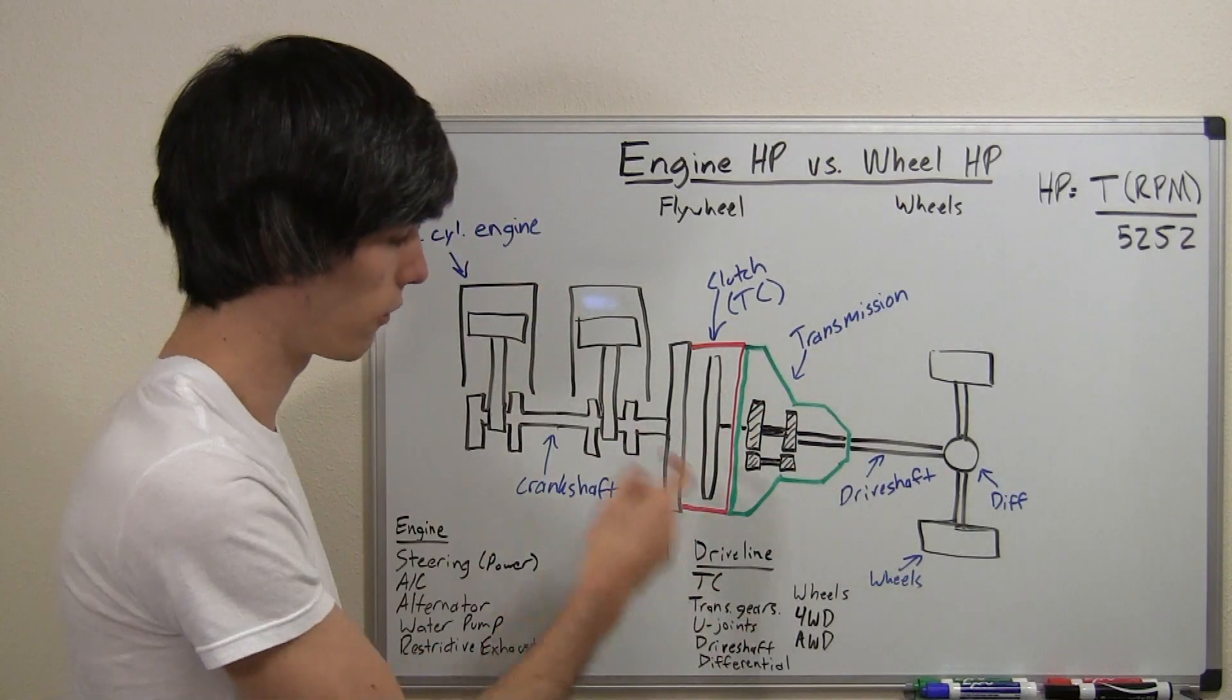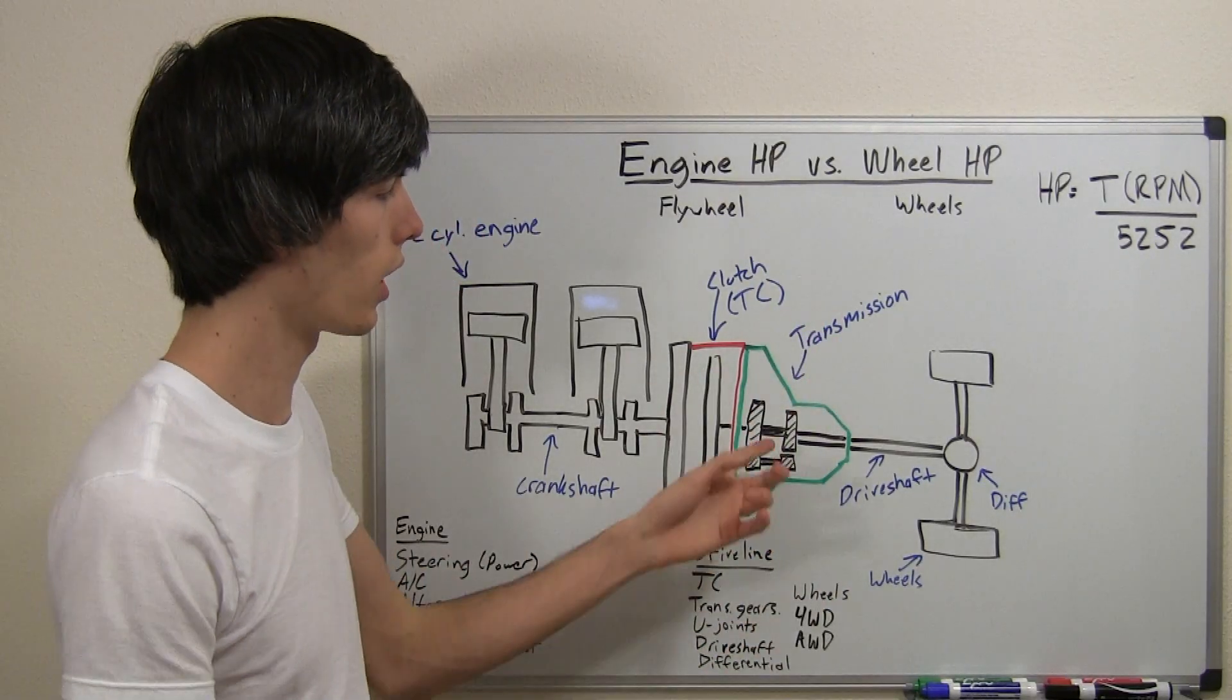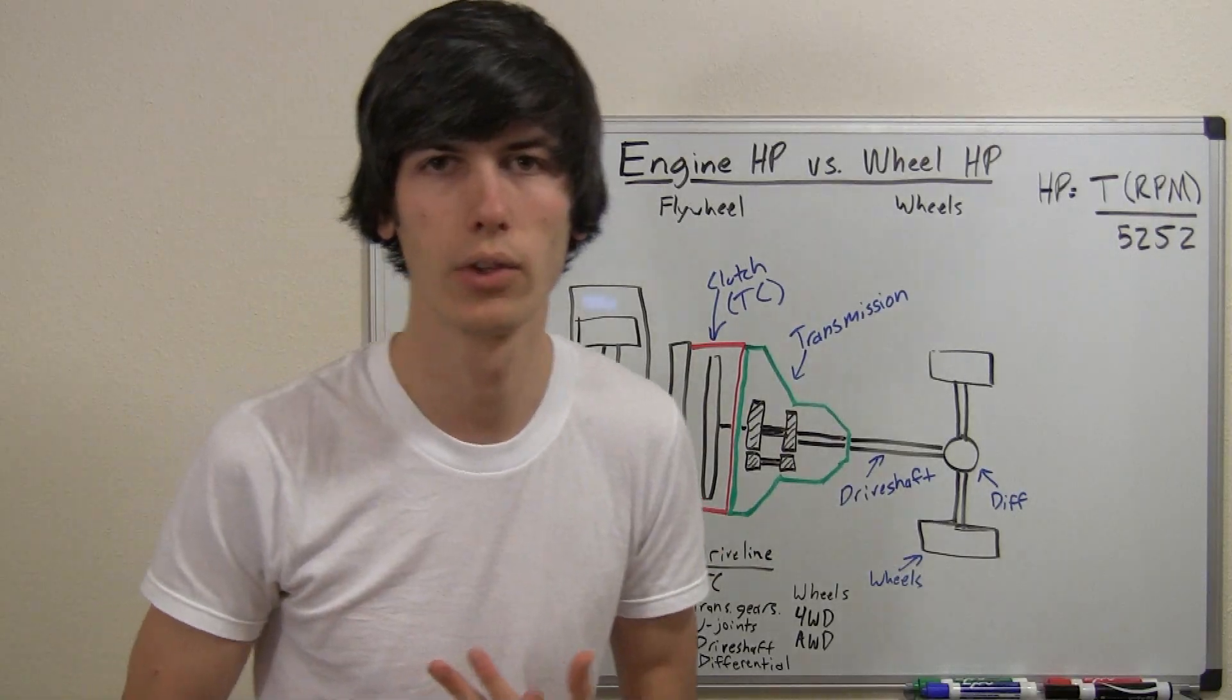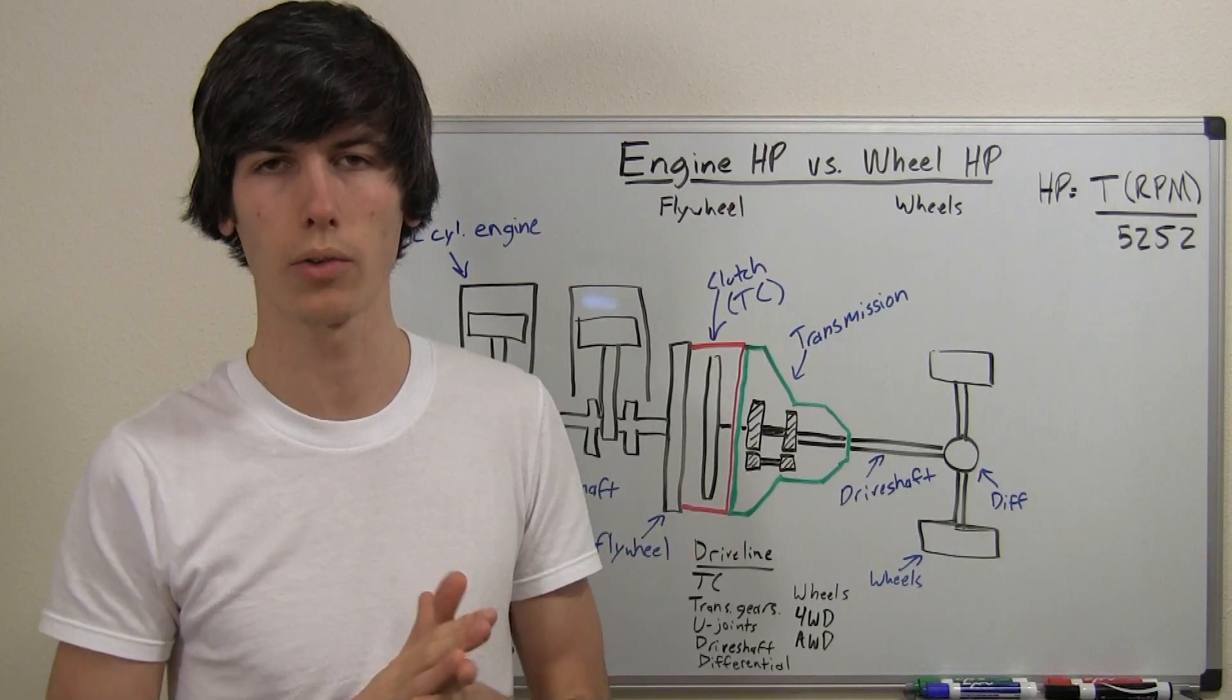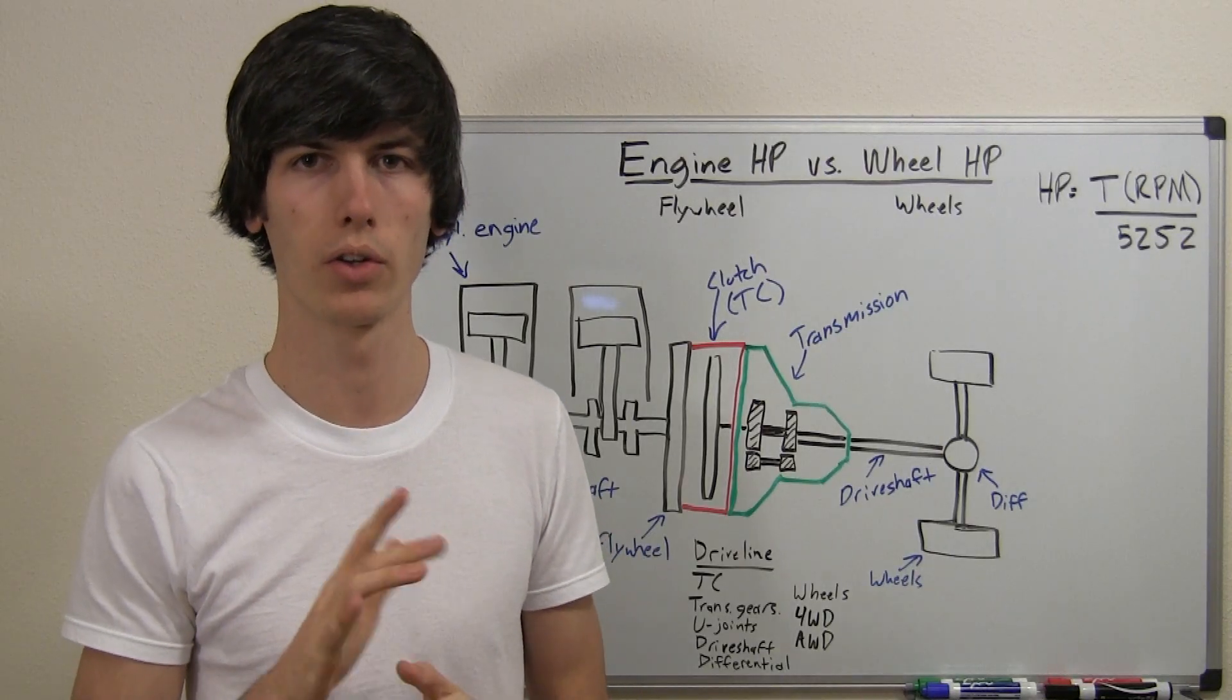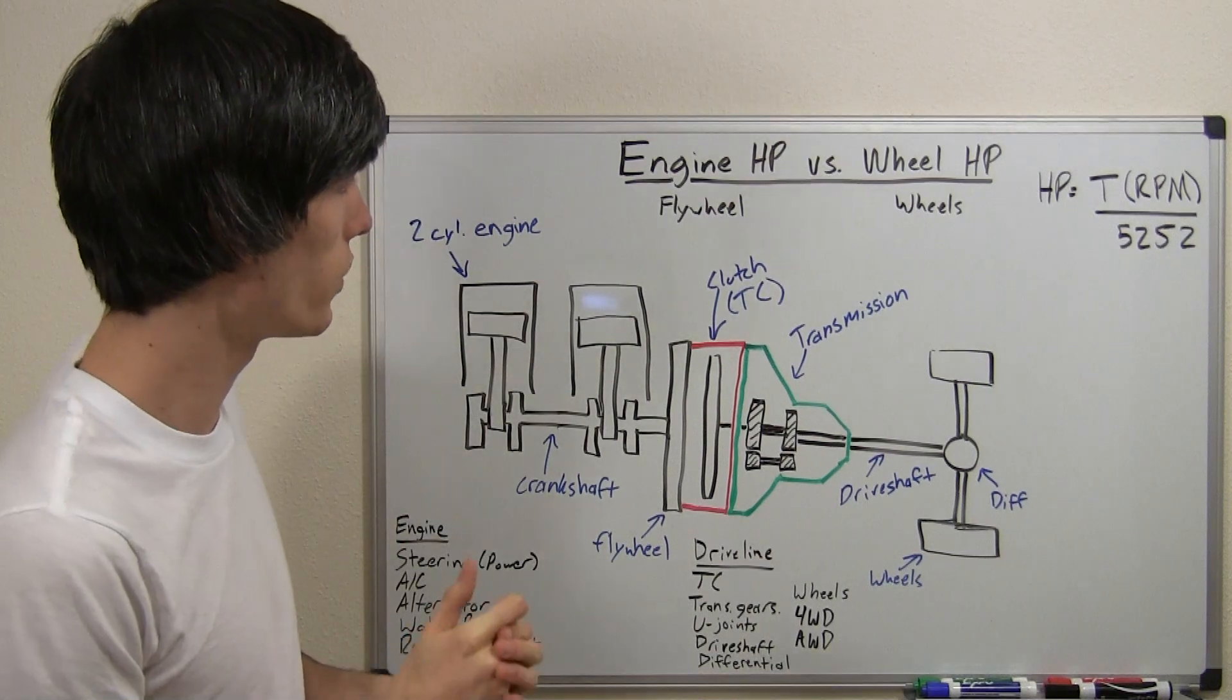If you have a four-wheel drive vehicle, or an all-wheel drive vehicle, and you're driving all four wheels, then you're going to obviously have a lot more friction, and so you can expect to lose a bit more of your engine horsepower. Your wheel horsepower is going to be maybe around 20% to 25% less than what your quoted engine horsepower is.